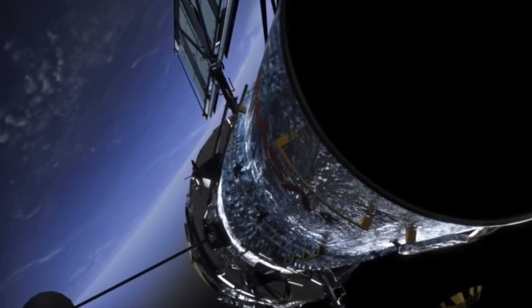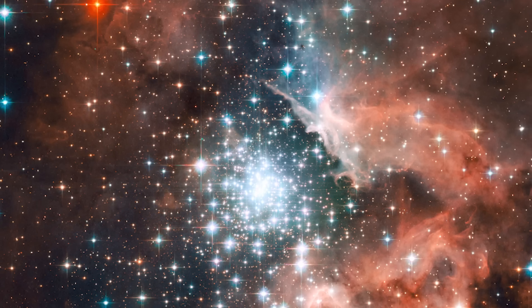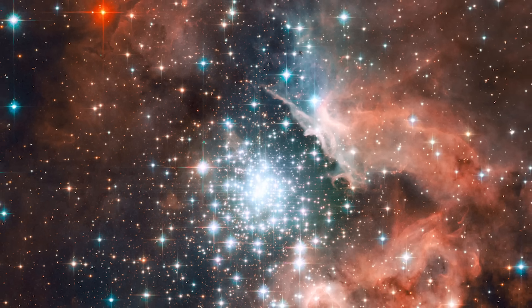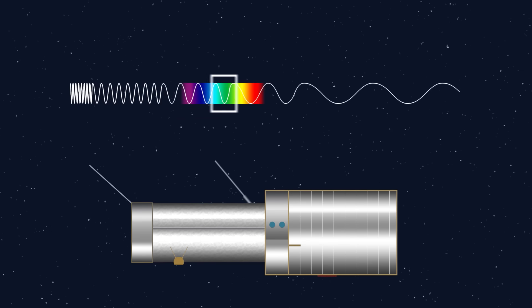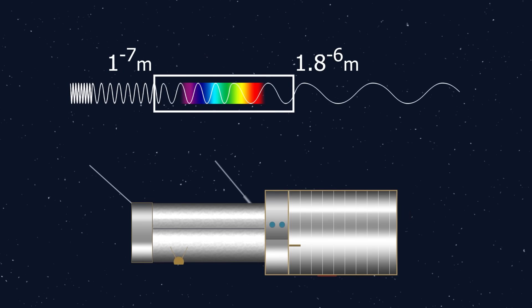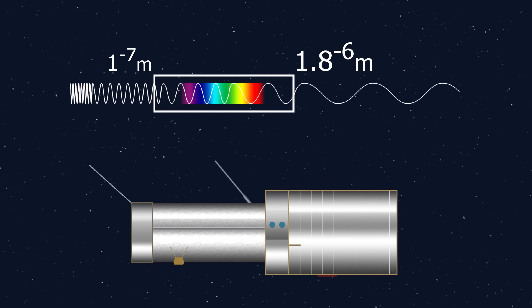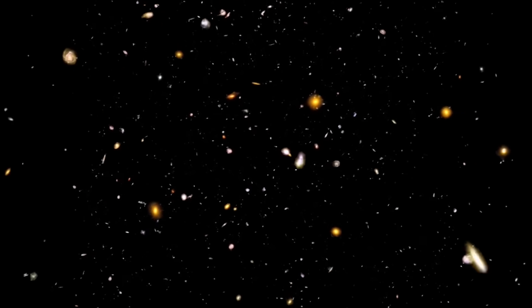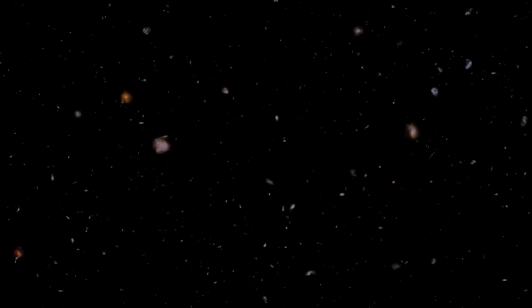Hubble is also limited by the types of wavelengths it can observe. Stars emit a wide range of light, and although Hubble can observe a wide range of wavelengths, it can't observe anything greater than near-infrared. This limits its ability to look back in time to distant objects.